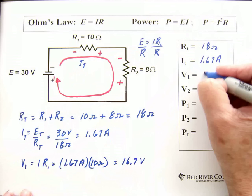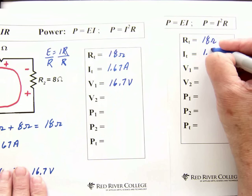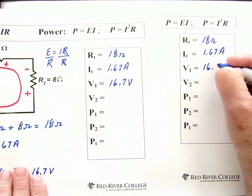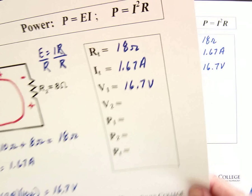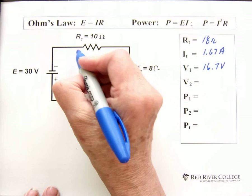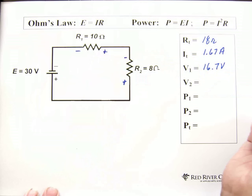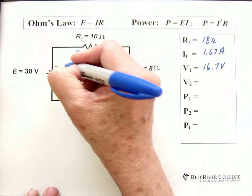16.7 volts. Let's move on to the next page. We're just going to transfer this information. RT is 18 ohms. IT is 1.67 amps. And V1 is 16.7 volts. So, now we're going to solve for the voltage drop. I'm just going to put in my pluses and minuses here again. Now we're going to solve for the voltage drop across R2.